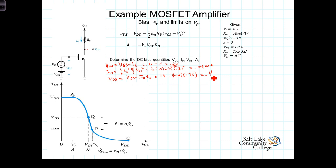Now we can calculate A sub V. A sub V, you'll recall is equal to negative K sub N times VOV times R sub D, or negative K sub N is K sub N prime times W over L.